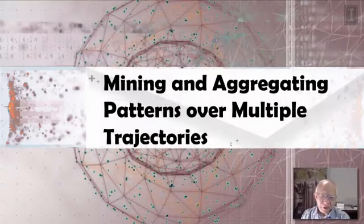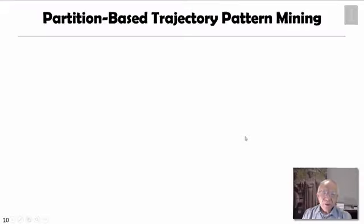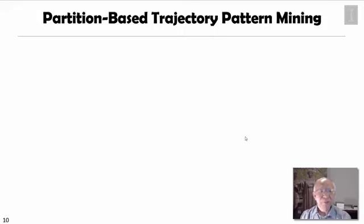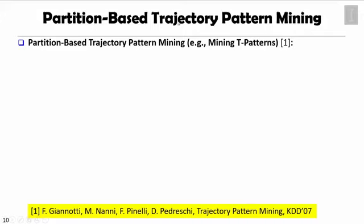In this unit we're going to study mining and aggregating patterns over multiple trajectories. When we study spatial and temporal patterns, an important pattern is trajectory pattern — looking at objects moving along the spatial map over time. One interesting method is partition-based trajectory pattern mining, which mines T-patterns (T for trajectory). This is work done by a group of Italian researchers published in KDD 2007, called trajectory pattern mining.